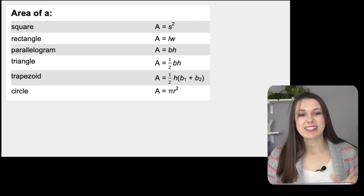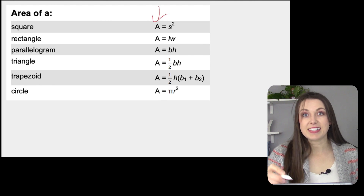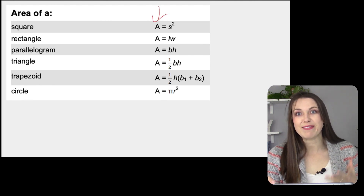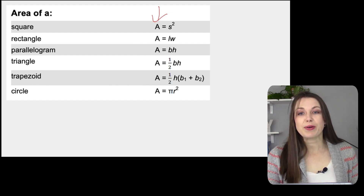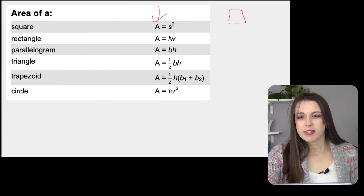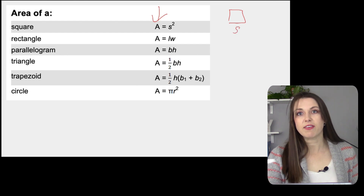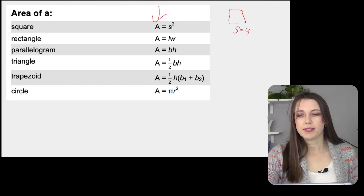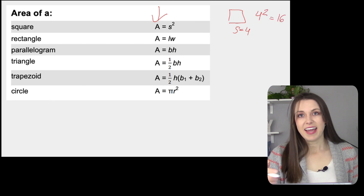Area. Notice all of these little A's here say area. So we're going to show you how to figure out the area for all the different shapes. Starting with a square — a square is just side squared. So let's say I have a side; I just square it. If side equals 4, I would go 4 squared equals 16, and that would be my area of the square.